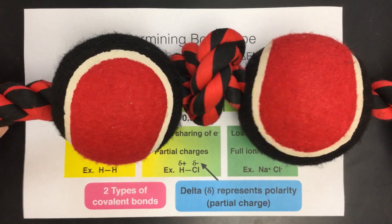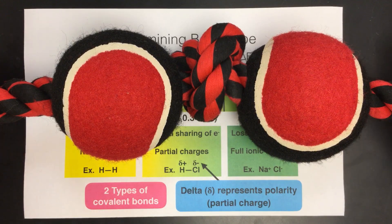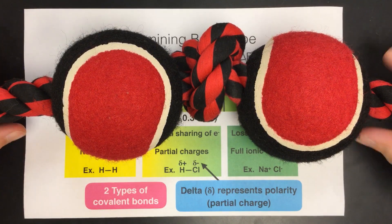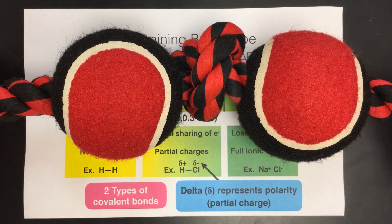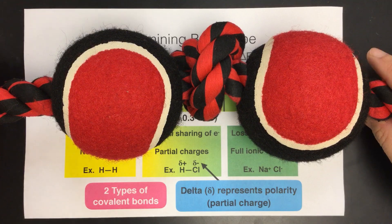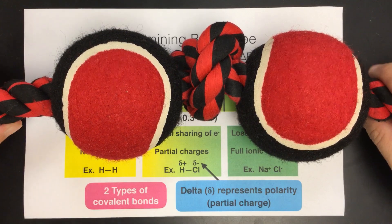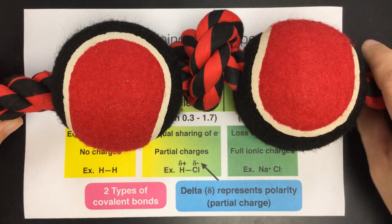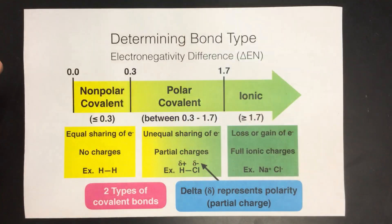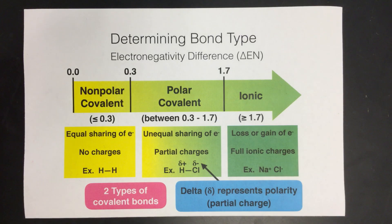The third type of bond occurs if you have a match-up that's really unfair — one atom that's really electronegative versus an atom with very low electronegativity. In that case, the more electronegative atom will just completely take the electrons, so they're no longer sharing, and that would be an ionic bond.